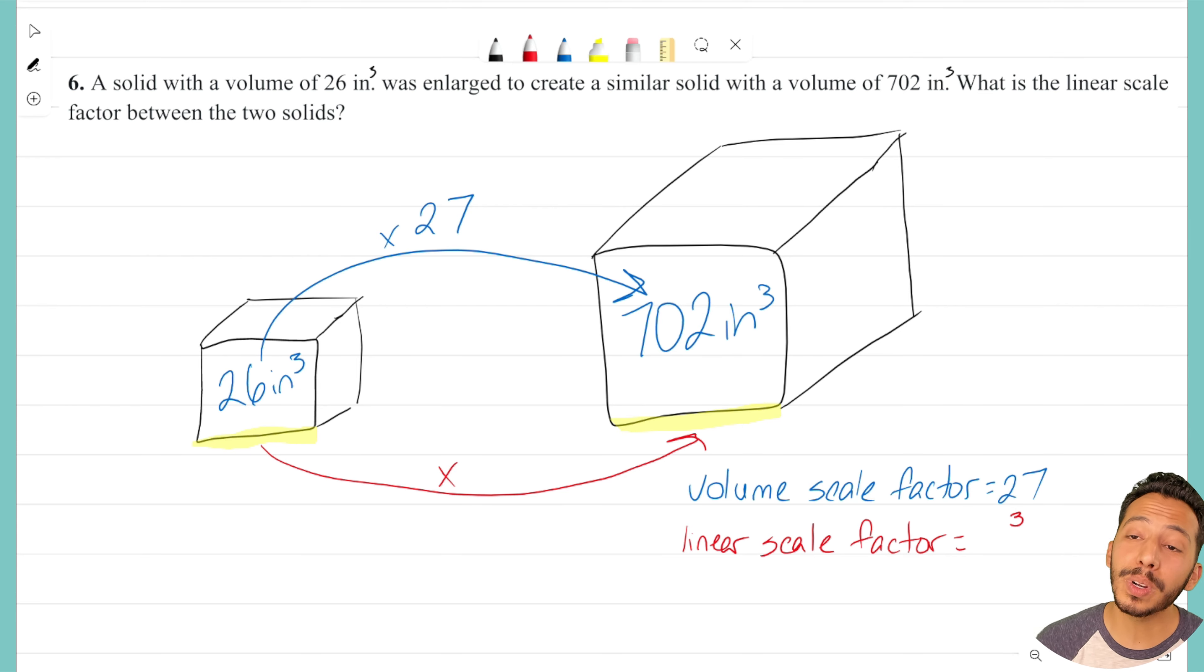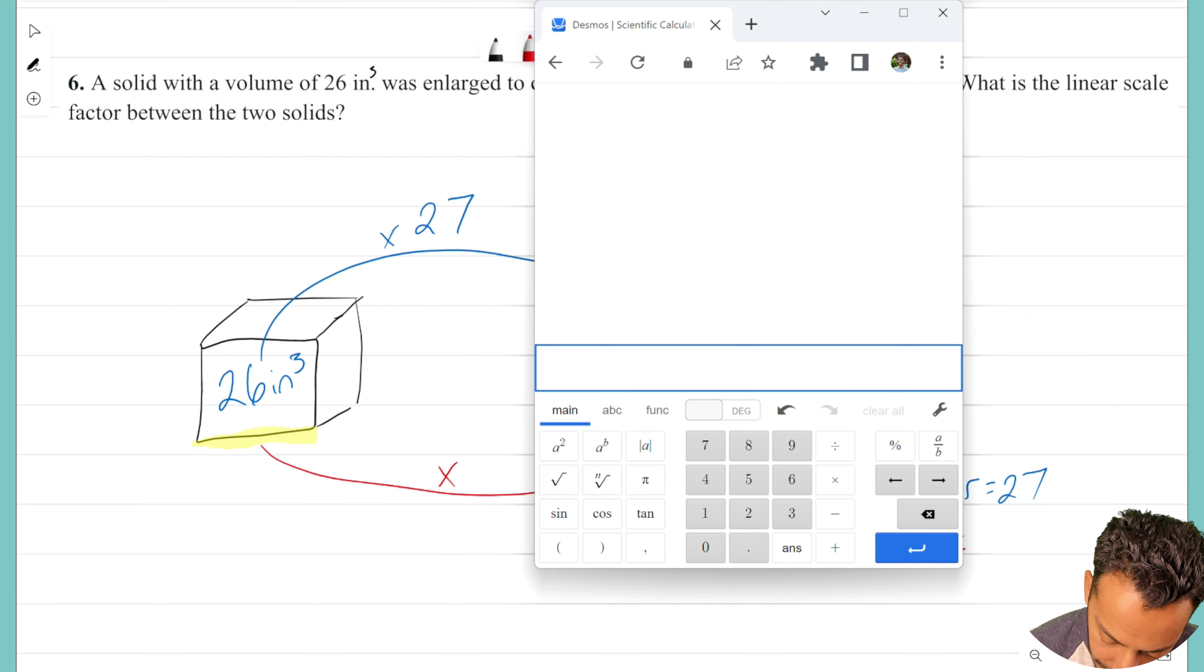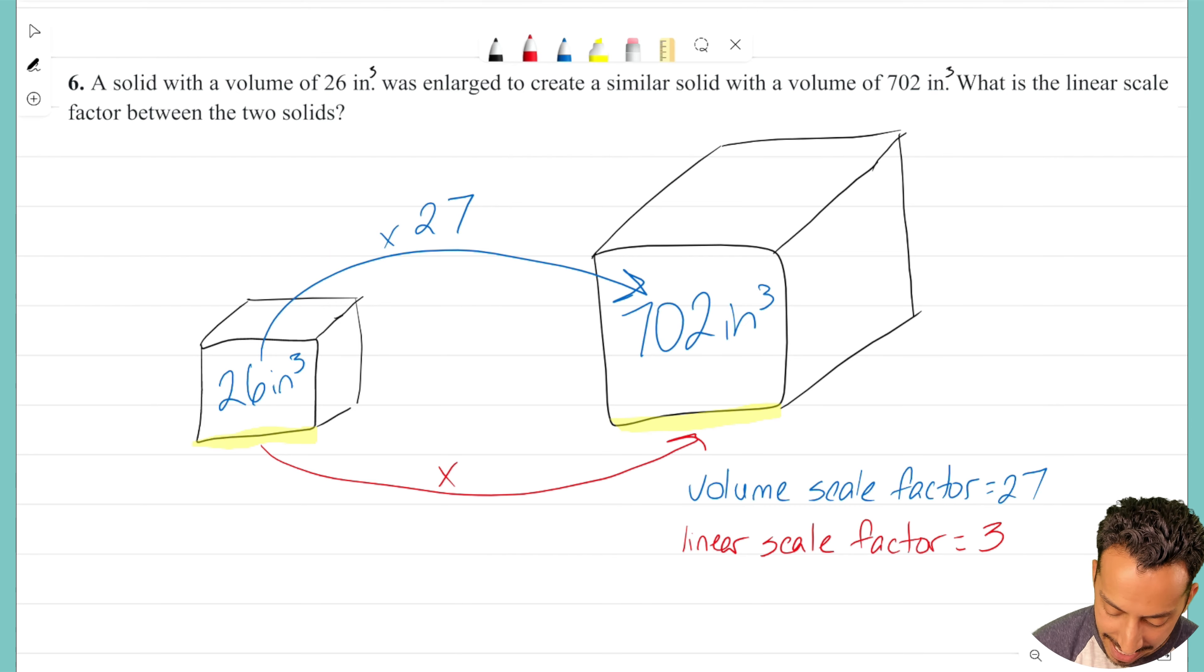So if I know that the volume one is 27, I kind of got to go backwards, right? I got to figure out what is the cube root of 27? What times itself three times is going to give you 27? Well, we have a calculator for that. I just have to go ahead and click this little button here. And I want to find the third root or the cube root of 27. And look right there. Our linear scale factor ends up being 3. I know that because the volume scale factor was multiplied by 27, which is the same thing as 3 cubed.